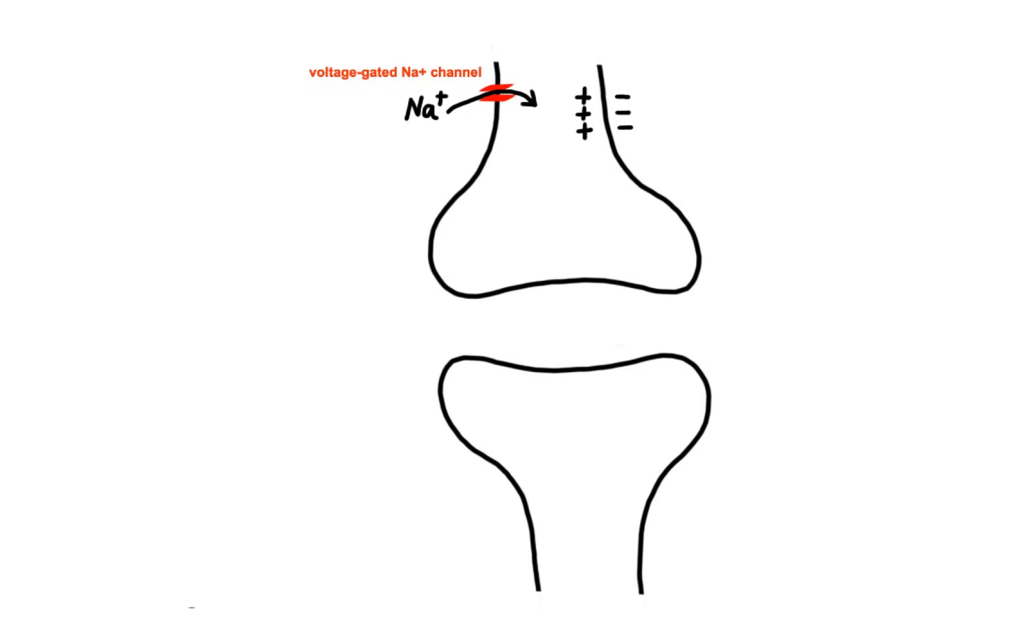Consequently, membrane depolarization leads to opening of high-voltage activated calcium channels, which then allow positively charged calcium ions enter the neuron, thereby triggering release of glutamate from the vesicles into the synaptic cleft.